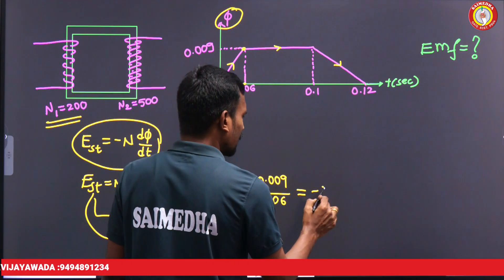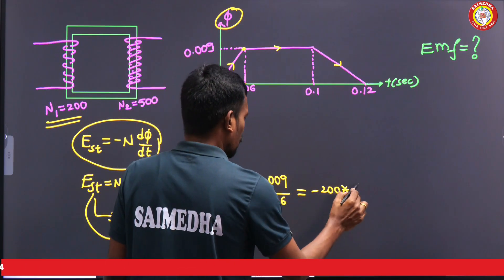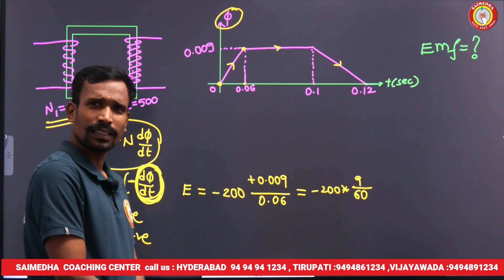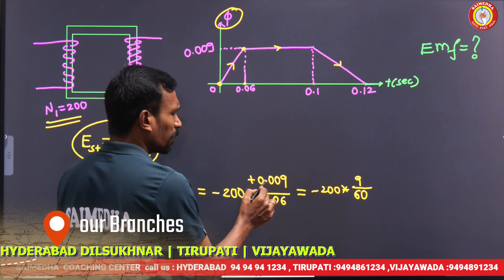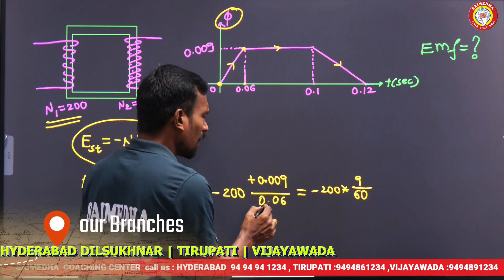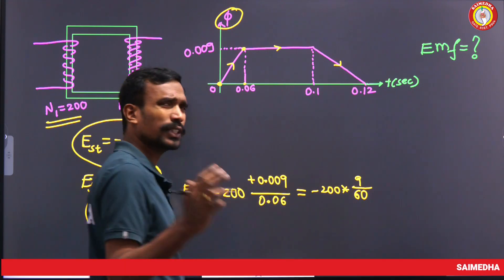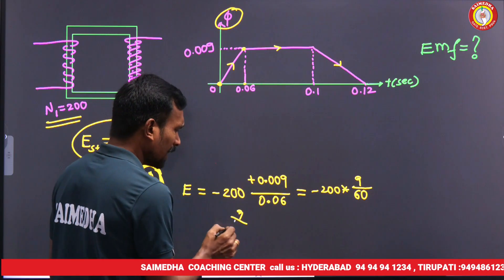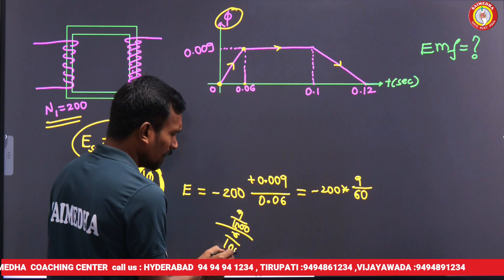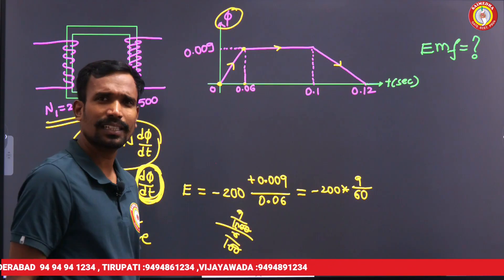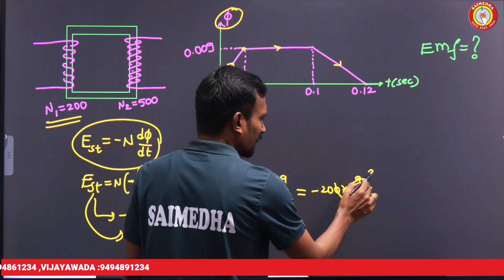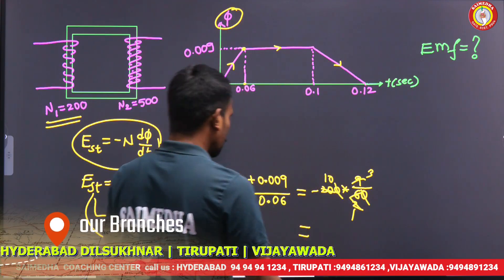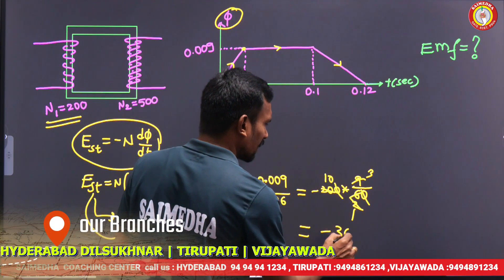So E = minus 200 into (9/60). Here after the decimal we have three numerals for 0.009, and two for 0.06, giving 9/1000 divided by 6/100, which simplifies to 9/60. The answer is minus 30 volts for the primary.